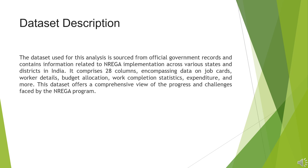The dataset used for this analysis is sourced from official government records and contains information related to NREGA implementation across various states and districts in India. It comprises 28 columns encompassing data on job cards, worker details, budget allocation, work completion statistics, expenditure, and more. This dataset offers a comprehensive view of the progression and challenges faced by the NREGA program.